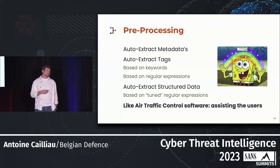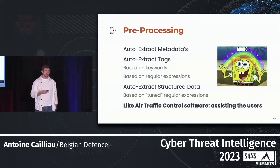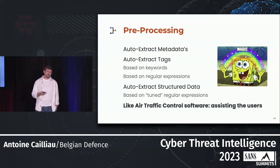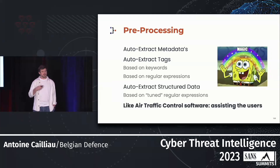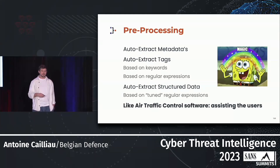Encoding documents takes quite a long time and is quite a workload for most teams. DocIntel is there with a bunch of features to help you streamline that processing. It will do its best to extract metadata and tags based on keywords or regular expressions — for example, if a report mentions a CVE, it will extract that information. It will also extract structured data like IP addresses, URLs, or domains. But it's really like air traffic control software: it's not there to replace the user, it's there to assist. The user still has to review the extracted information to ensure high quality registered documents.